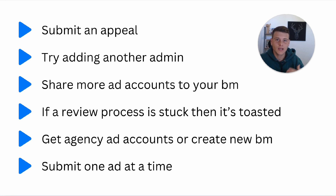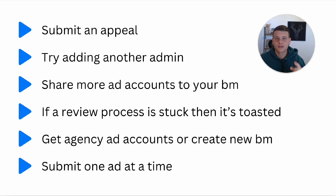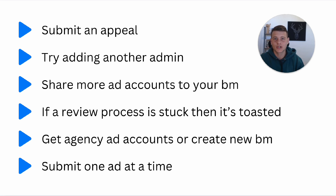One last thing: if your ad account got disabled because too many ads got rejected, what you want to do is submit one ad at a time. For example, if you're testing five ad sets with five ads each, submitting the entire campaign means submitting 25 ads at once — and if one has a problem, you might get 25 ads rejected, which will likely get your account restricted immediately. Instead, publish one ad at a time, wait for approval, then publish the next. This way you can avoid getting your account disabled from too many rejections.